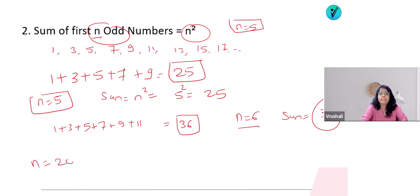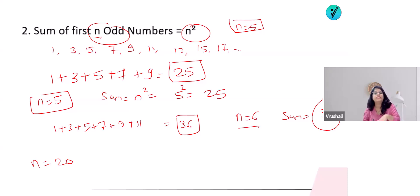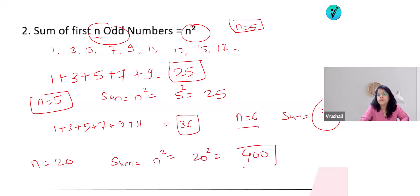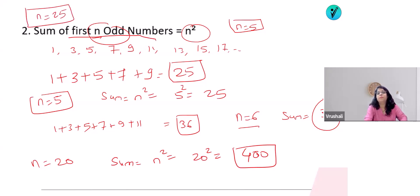For the sum of first 20 odd numbers, the odd numbers are 1, 3, 5, 7, 9, 11, 13, 15, 17, 19, 21, 23, 25, 27, 29, 31, 33, 35, 37, 39. With n=20, sum = n² = 20² = 400. Now answer in the comment box: what is the sum of the first 25 odd numbers?